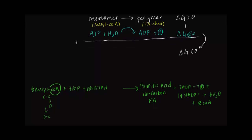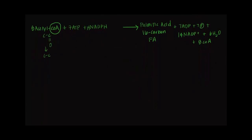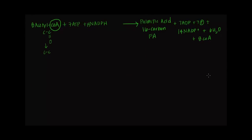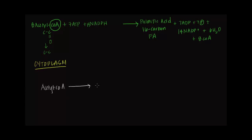Once in the cytoplasm with acetyl-CoA available, the first step of fatty acid synthesis is to charge up acetyl-CoA to a higher-energy molecule called malonyl-CoA. This is thermodynamically unfavorable, so it must be coupled with a favorable reaction — the hydrolysis of ATP to ADP plus a free phosphate group.